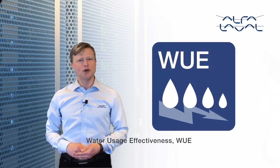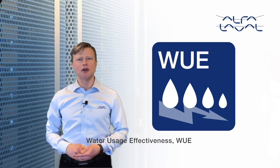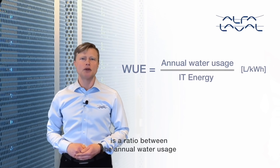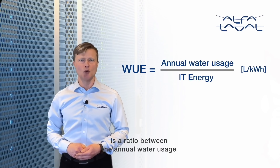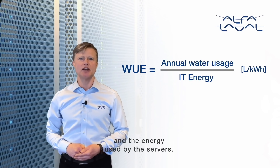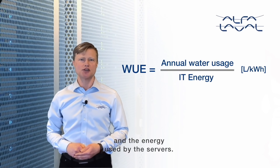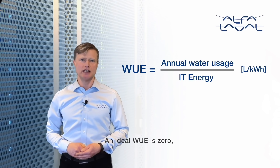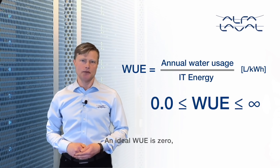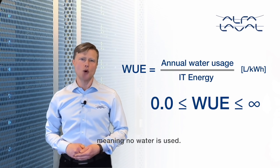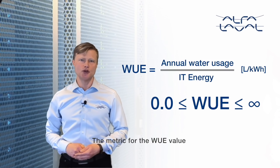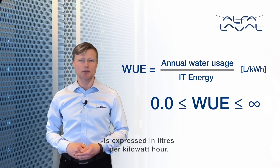Water Usage Effectiveness (WUE) is a ratio between the annual water usage and the energy used by the servers. An ideal WUE is zero, meaning no water is used. The metric for the WUE value is expressed in liters per kilowatt hour.